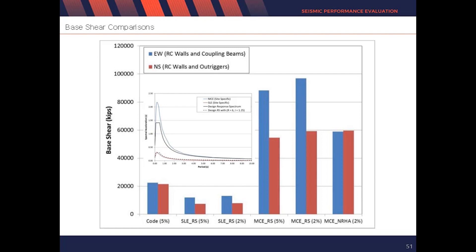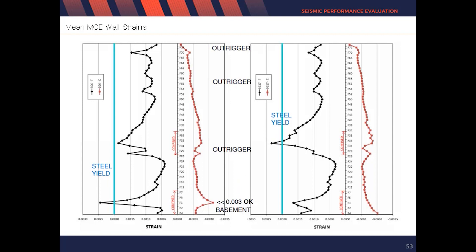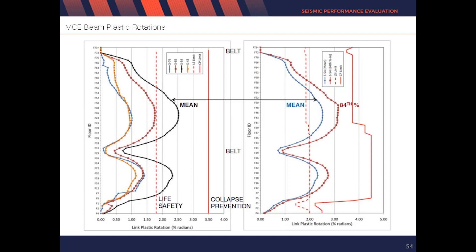The result depends on the structure type. In the maximum considered earthquake level, the permitted story drift value is only 3%, and as you can see, they were satisfied at each level. The effect of the outrigger belt truss is visible in the model. Some floor results show fiber tensile and compressive strain of the RC wall, which is satisfied at an acceptable level. Regarding rotation caused by a plastic hinge, it was satisfied with collapse prevention, but did not satisfy life safety.